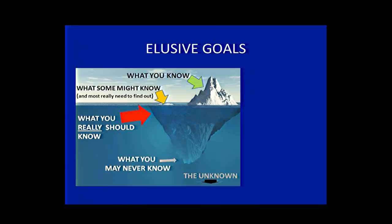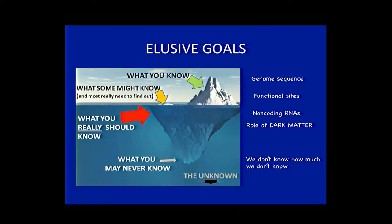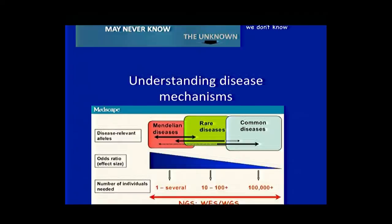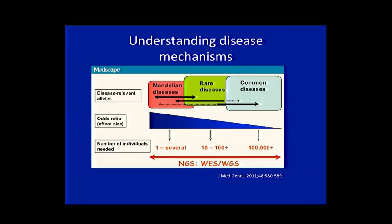Much of what we know about the genome is only the tip of the iceberg, and most of the secrets are still hiding beneath the surface. Only when we understand more about the regulatory and non-coding DNA, non-coding RNA, will we understand the role of the dark matter in the genome. We do know that the impact of sequence variance in diseases ranges from single-gene disorders to complex, multigenic diseases, with very different underlying genetic architectures.